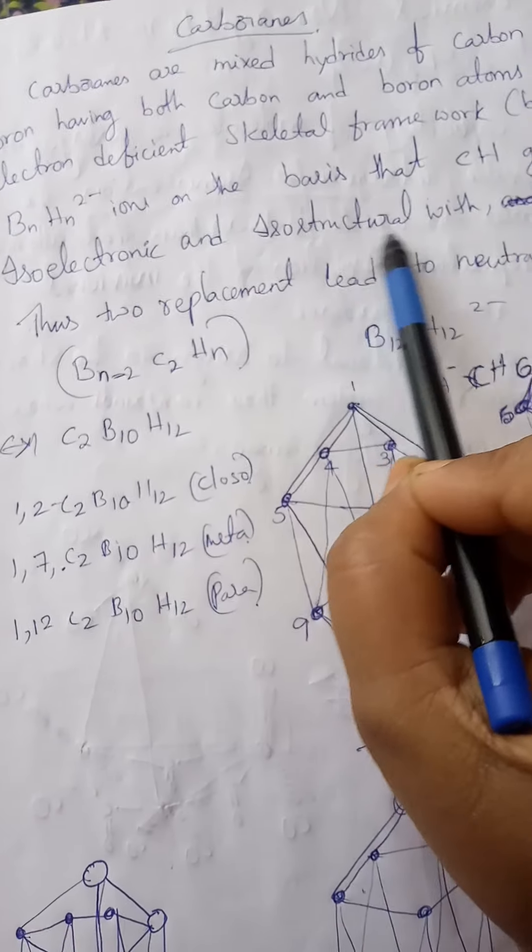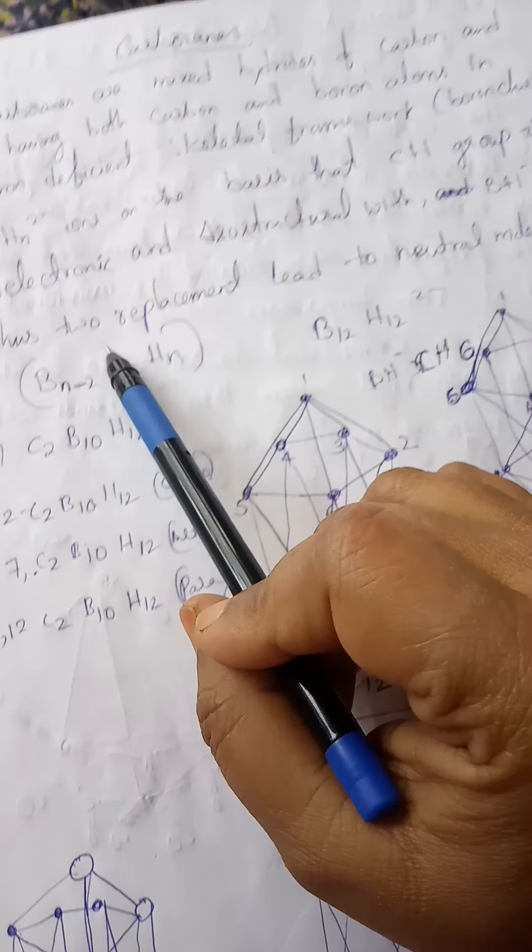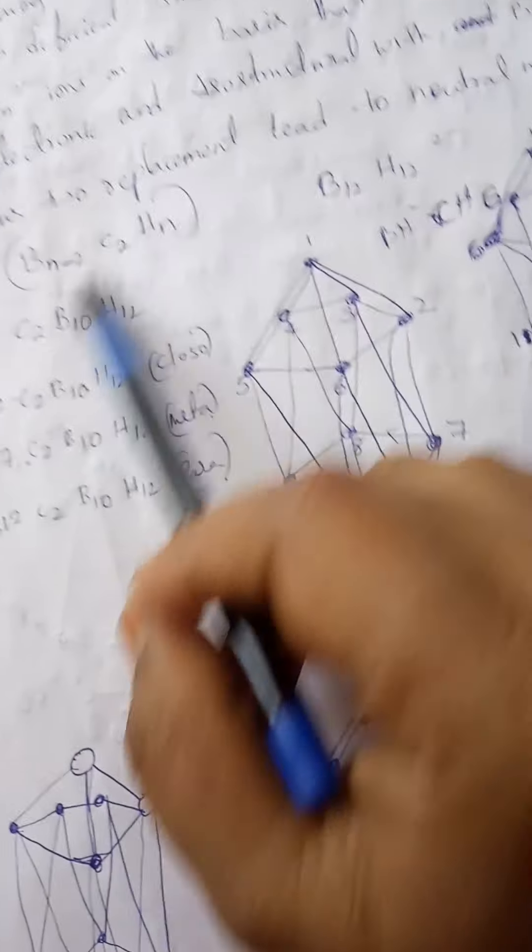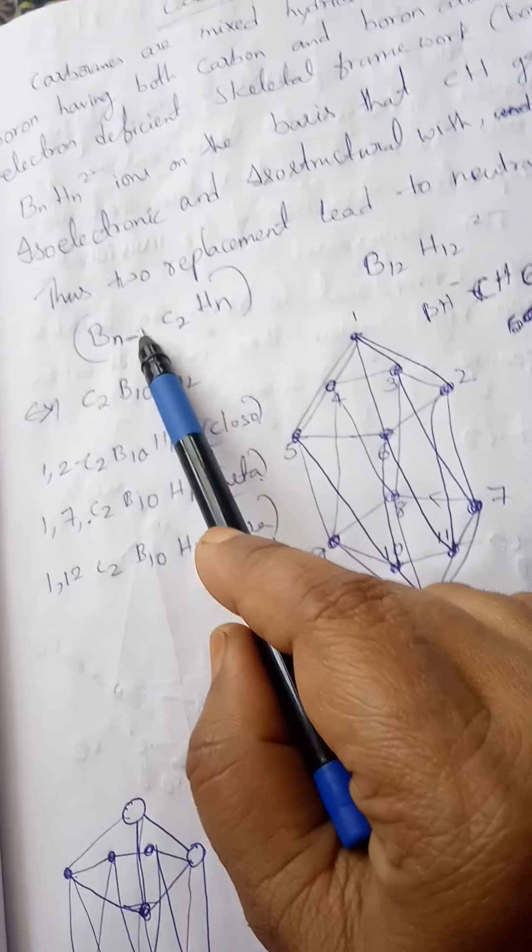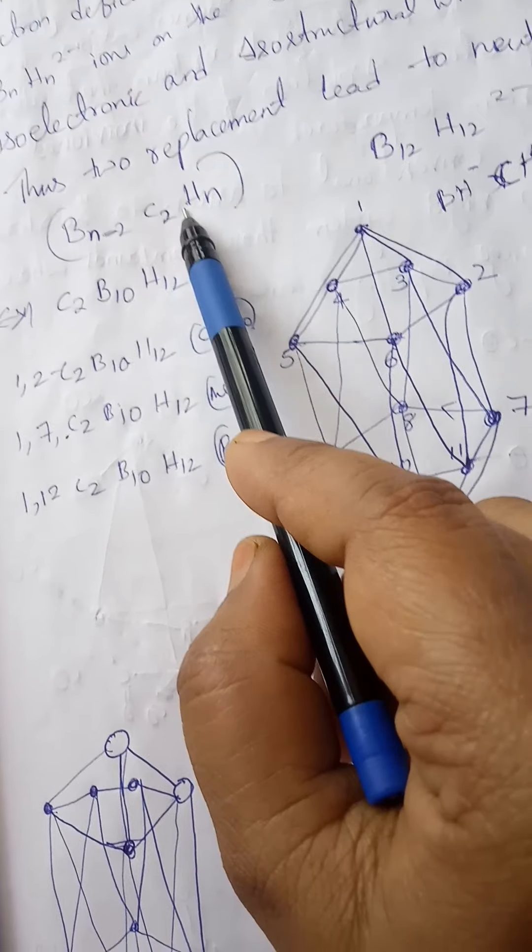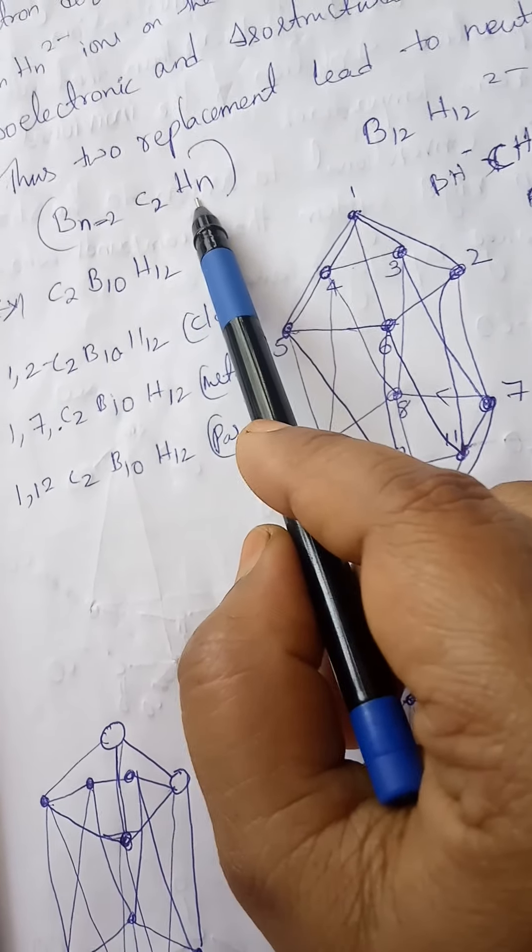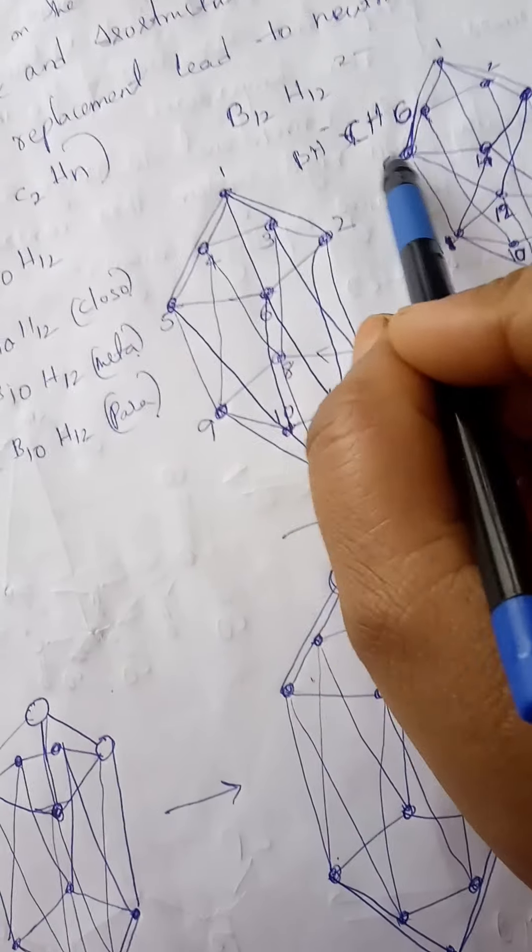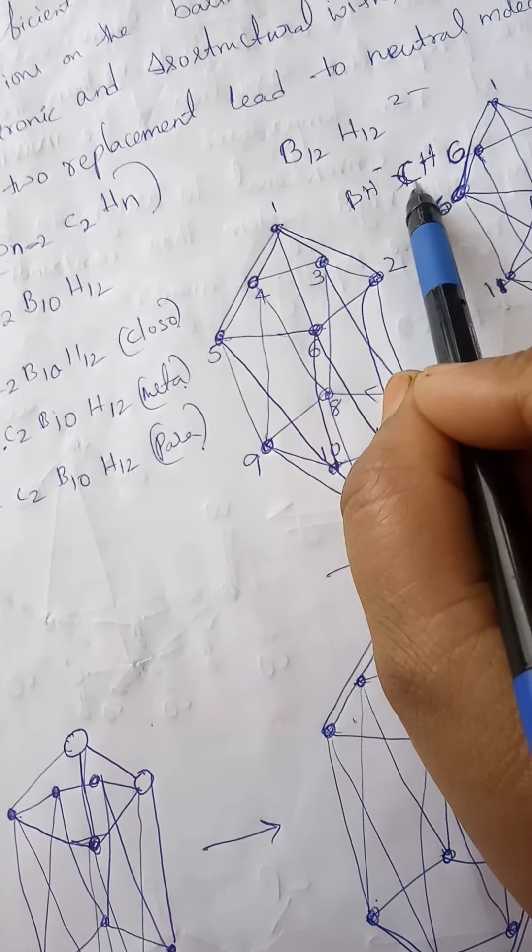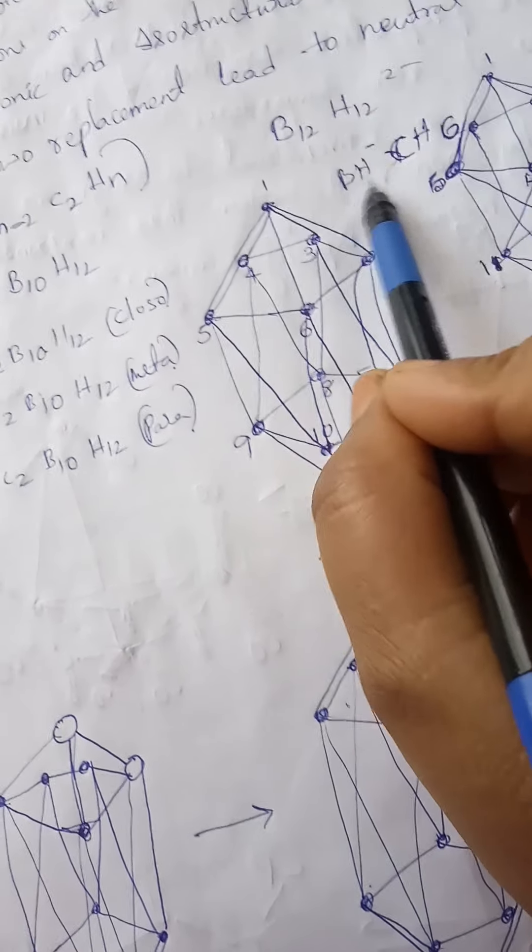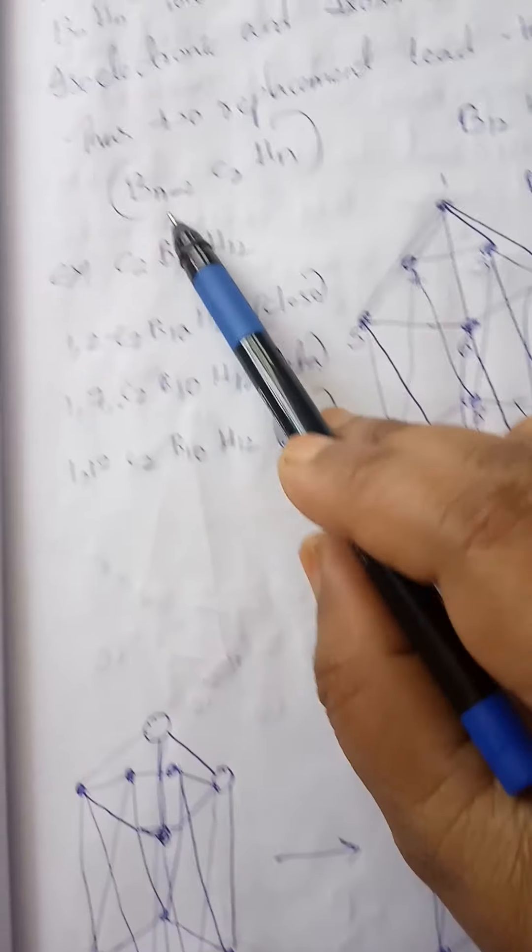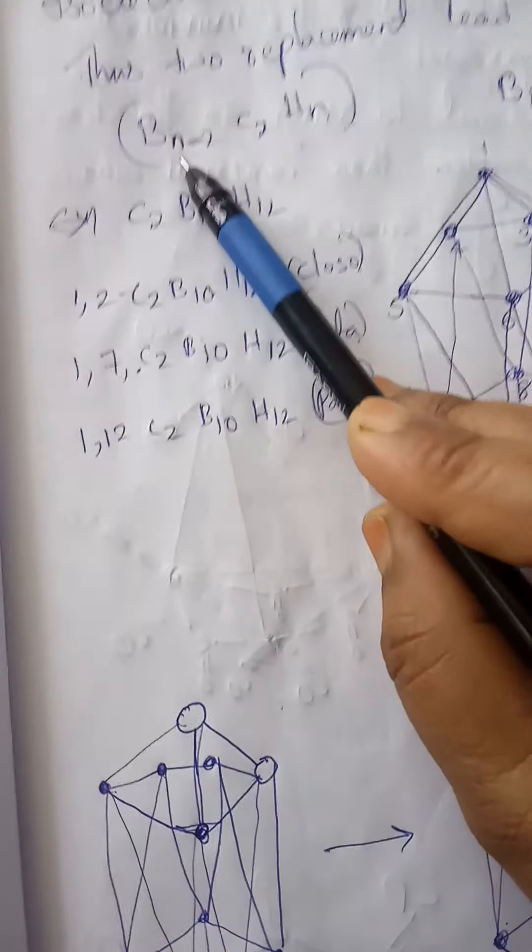It is the best replacement of the BH unit with the CH unit, as these are isoelectronic and isolobal. This replacement leads to neutral molecules. So here we remove two boron atoms and add two carbons. That means there is no change in the hydrogen, because CH replaces BH minus. Hydrogen number is the same, but only change in boron and carbon.